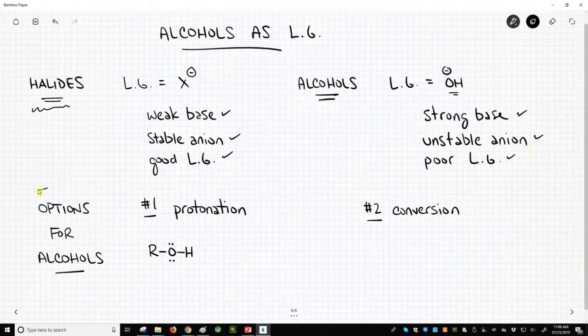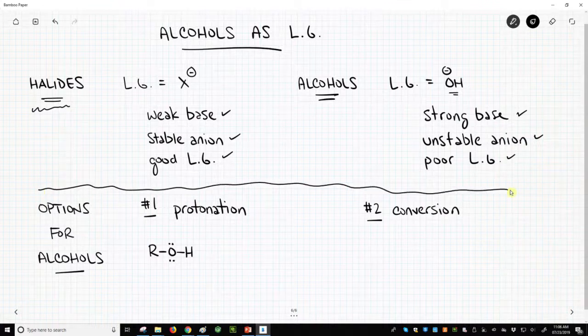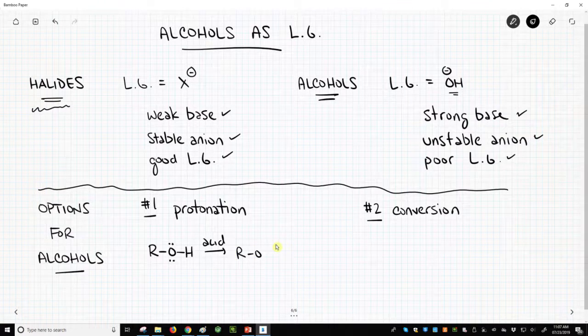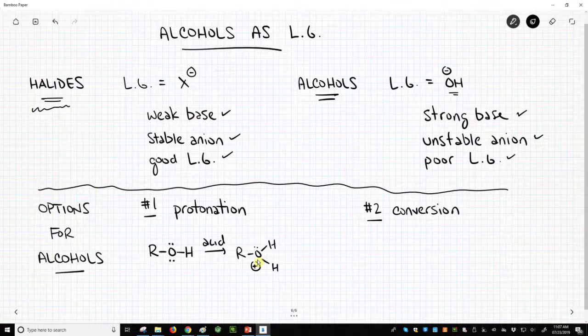Well, there are two options, and they're on the bottom of the screen. One is that we could protonate our alcohol. So what if we reacted this with an acid, our alcohol, and we put a proton on our oxygen so that it had a positive charge.